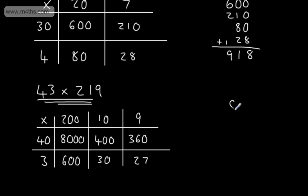I'm now going to write this out neatly in columns. Starting with the thousands, I'm going to have 8,000. Then I'm going to take the hundreds: 600, 400, 360. Then I'm going to take the tens, 30, and 27. So I've put that neatly in now, these columns.